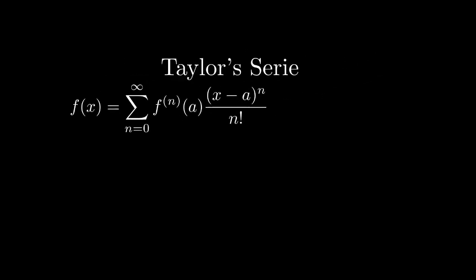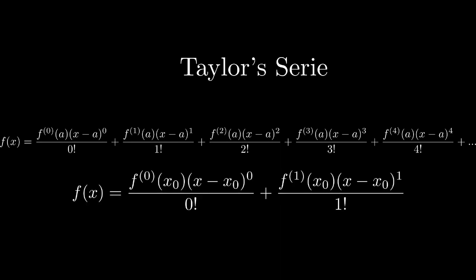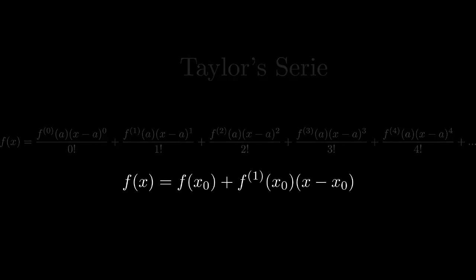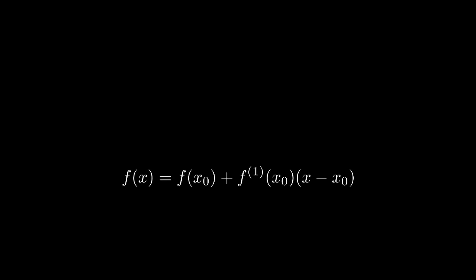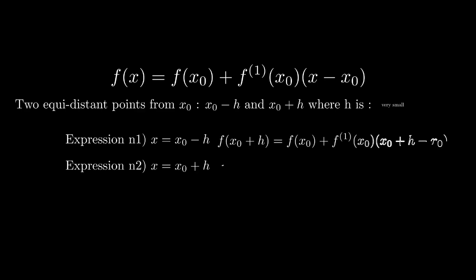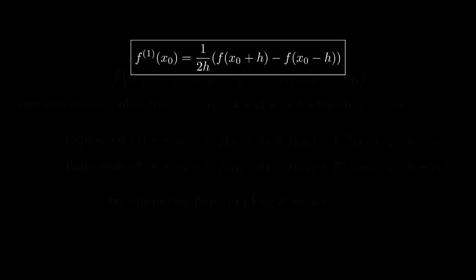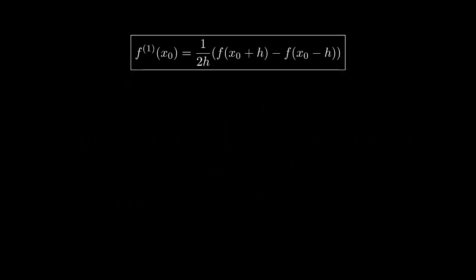Do you remember the Taylor series, which I happen to have a video about? As a brief reminder, it is a way to approximate a function with an infinite sum of its derivatives. The more terms of this series you compute, the better the approximation is. But, what if we limit ourselves to the first two elements? Let's say we want to evaluate this expression at two equidistant points from x₀, for example x₀ plus h and x₀ minus h, where h is a very small number. We will find that by subtracting the second expression to the first one, and then after rearranging, we just found a way to express the derivative of our function at x₀.